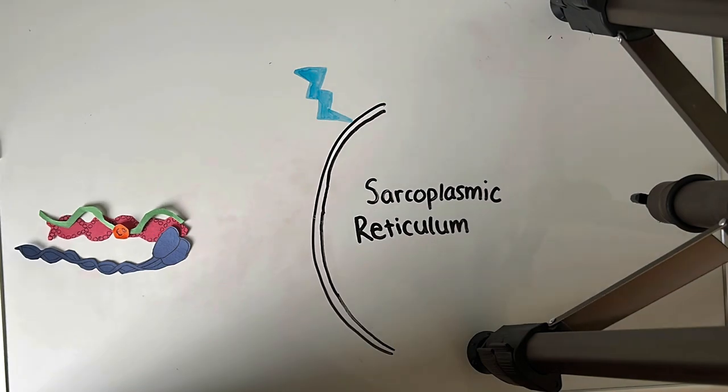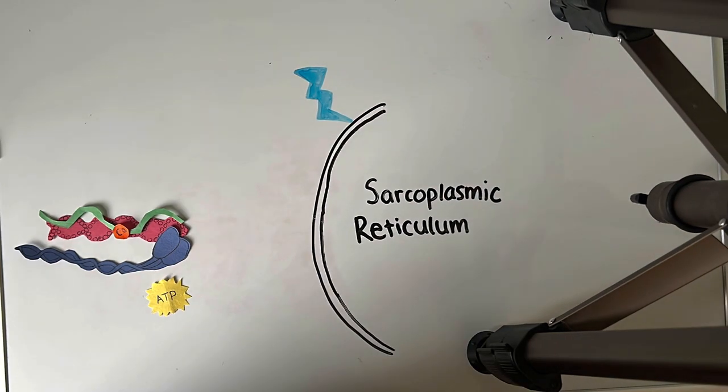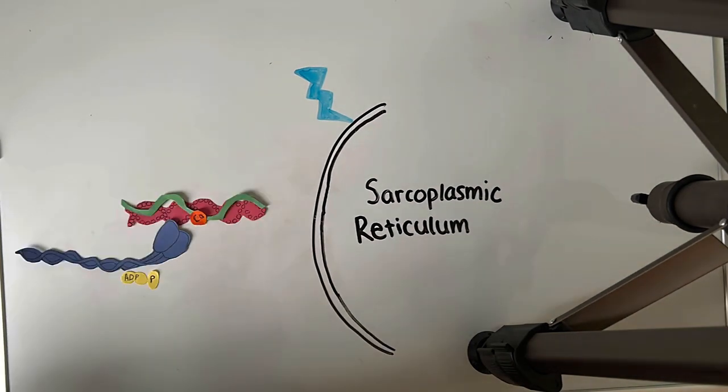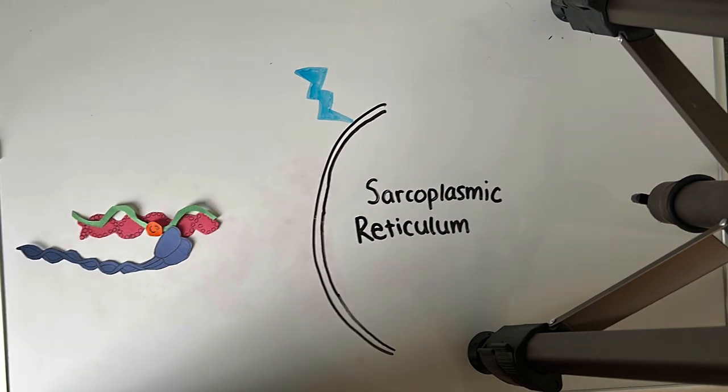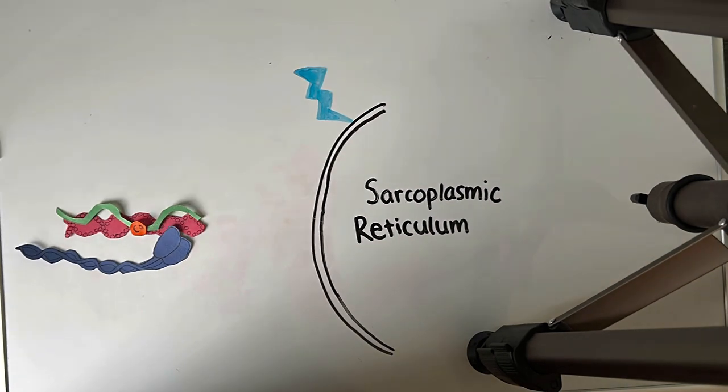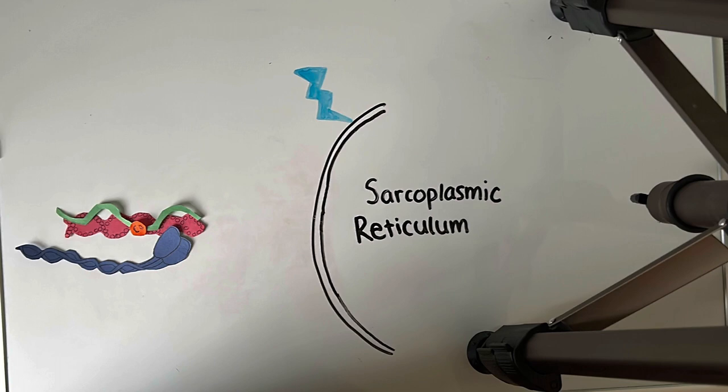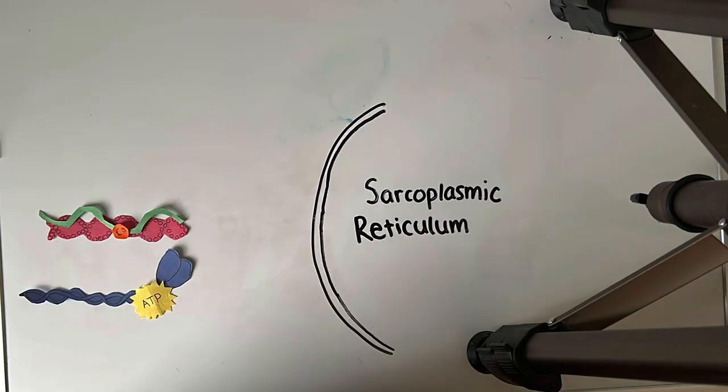Once all energy is exhausted, a new ATP molecule arrives. This provides more energy for actin and myosin to slide past each other even further. The sliding filament theory is named for this repeated sliding action. Muscle contraction continues until the nerve impulse stops and actin and myosin return to their relaxed state.